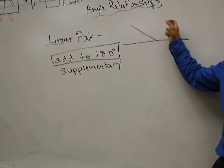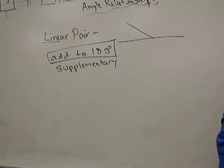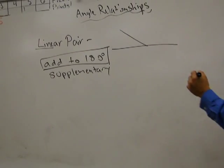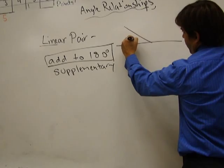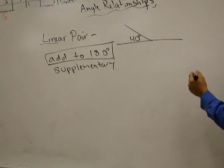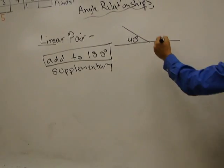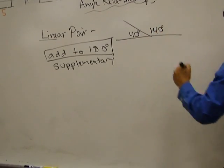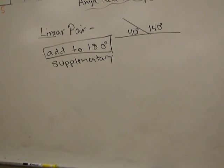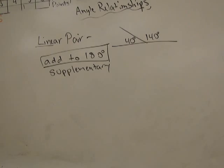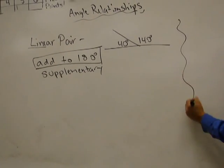So linear pairs, angles that are next to each other, add to 180. So for instance, if this angle was 40 degrees, what would this angle be? 140. Because together, they have to add up to 180. So that's a linear pair. That's the first simple one.